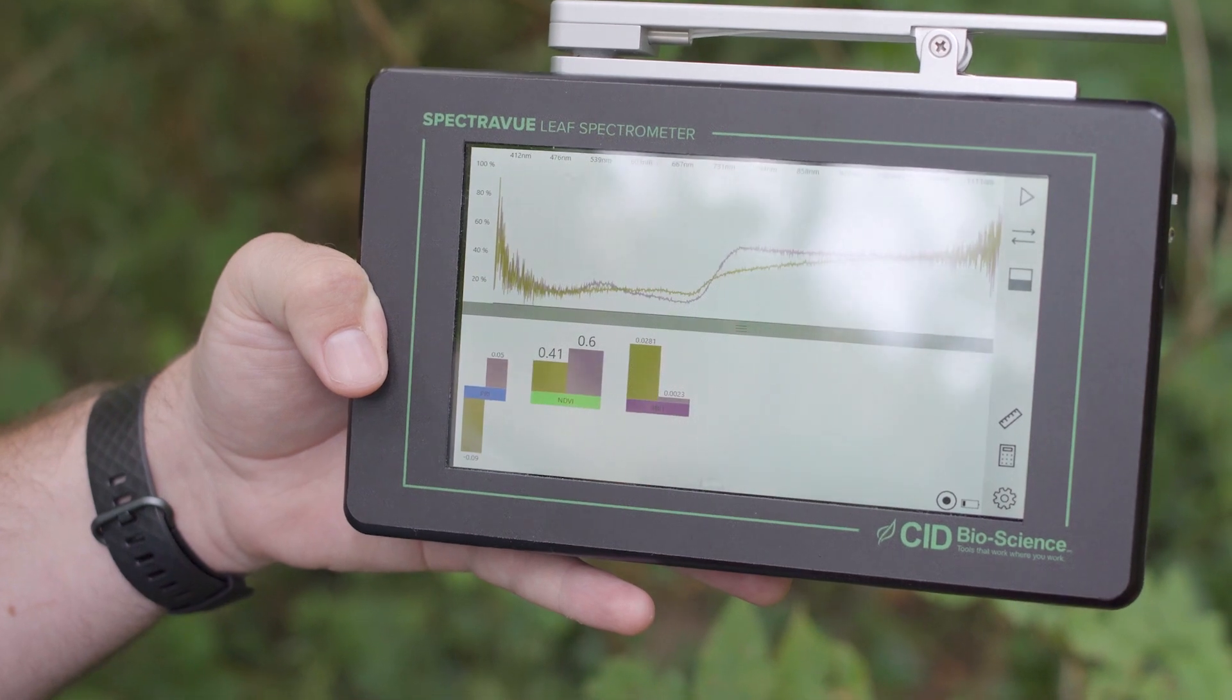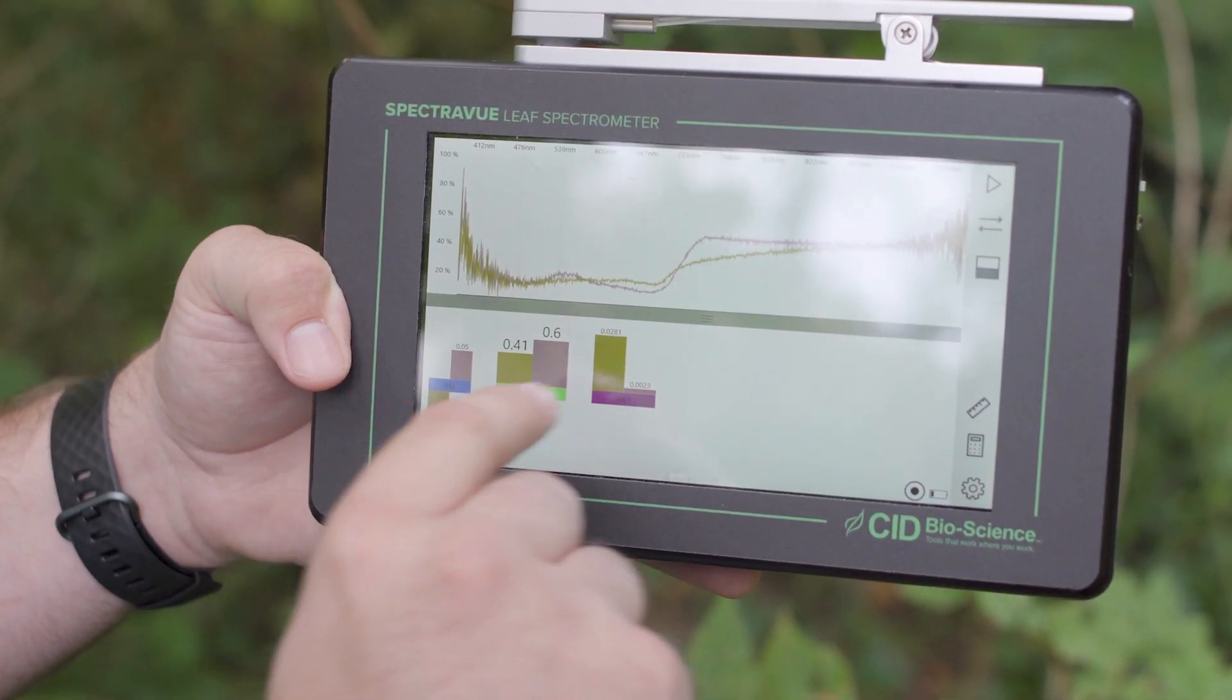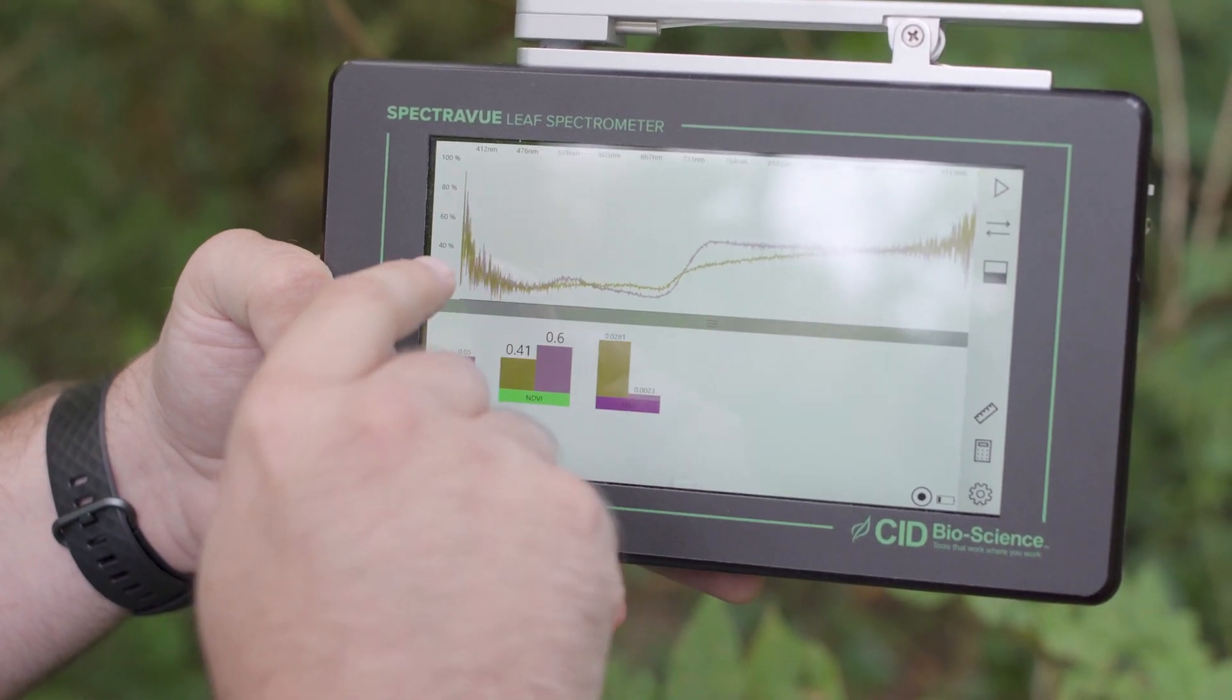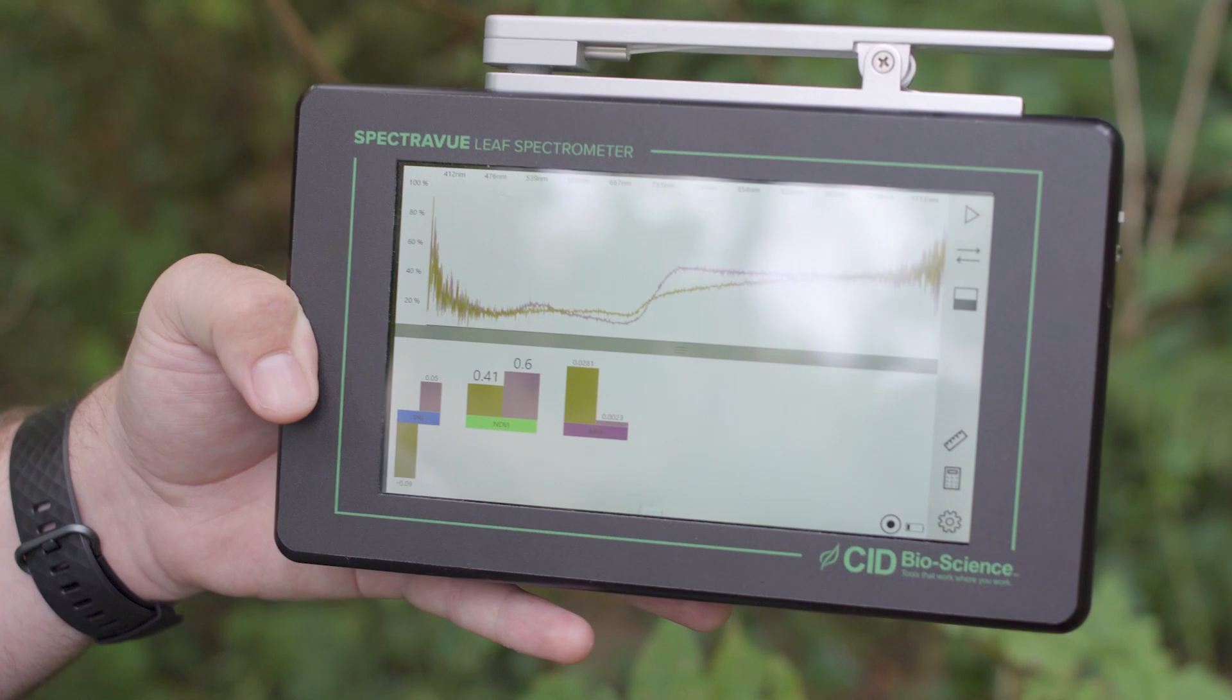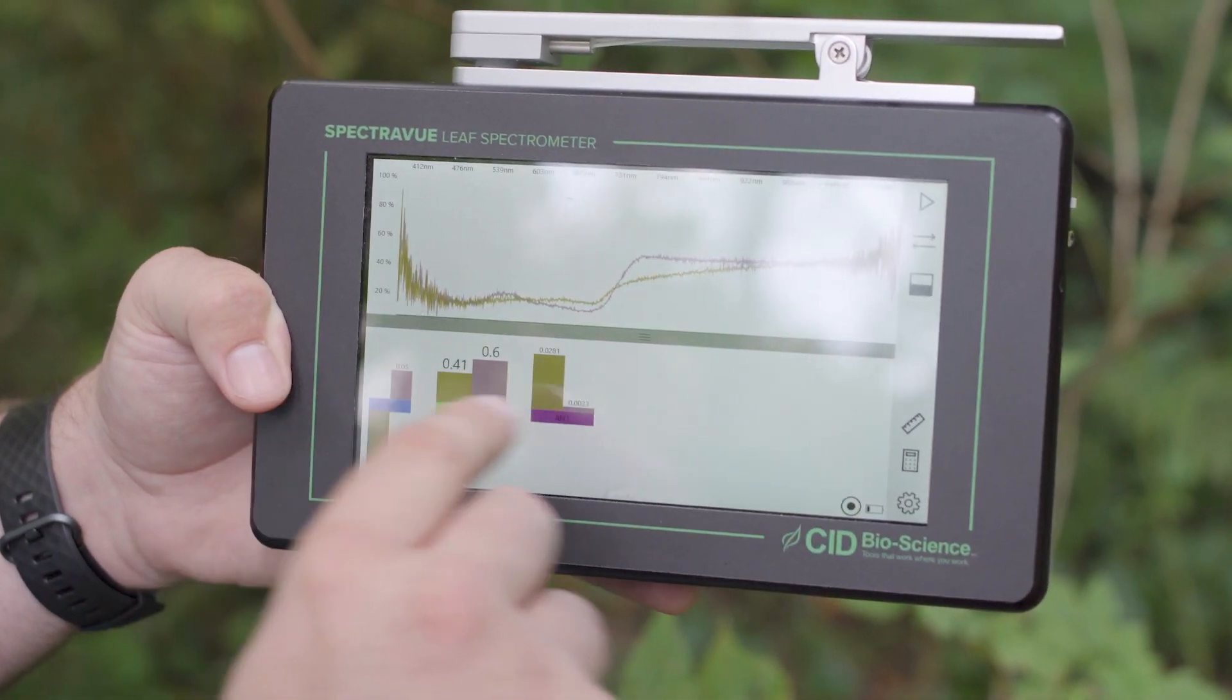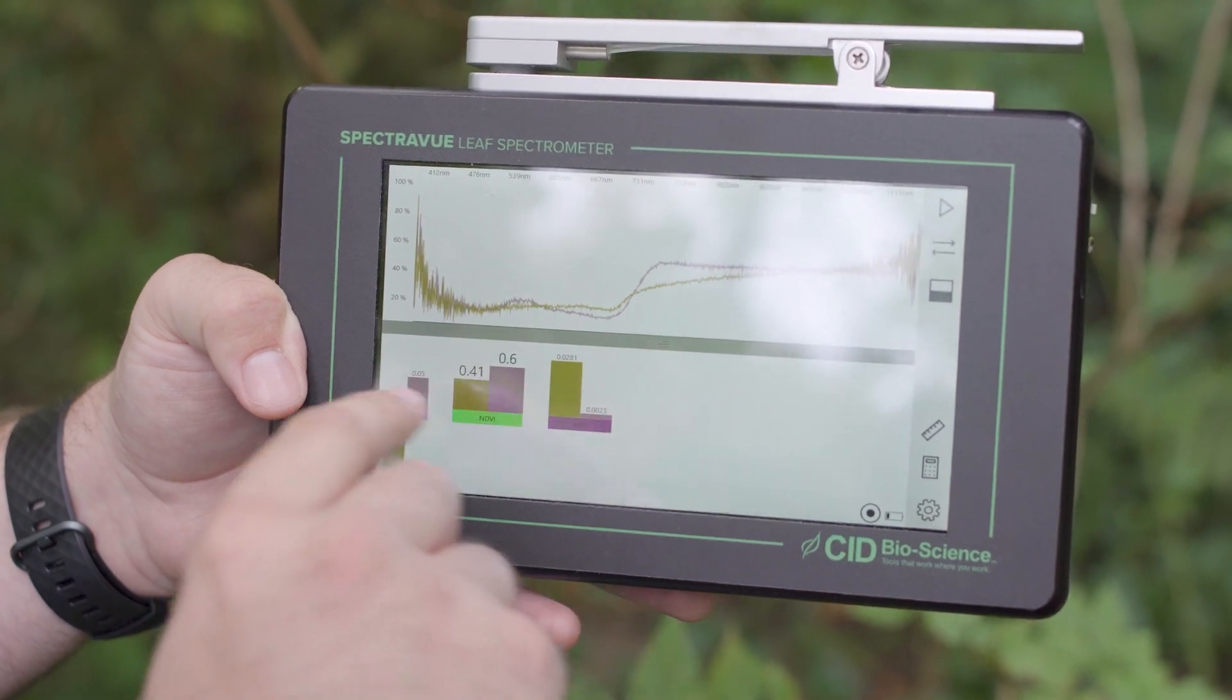The unhealthy leaf is represented by the goldish green bars here down in our indices, and then also by the goldish green line in our spectrograph. These numbers down here indicate the values for each of these pre-selected indices.